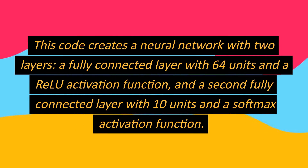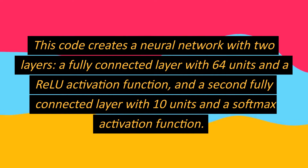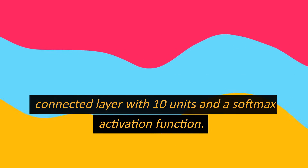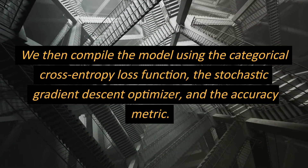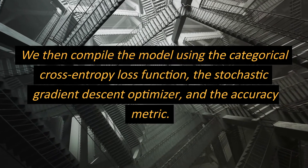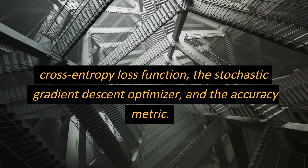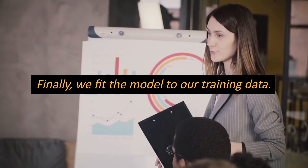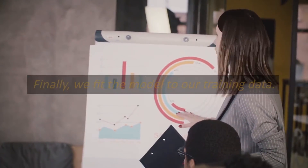This code creates a neural network with two layers: a fully connected layer with 64 units and a ReLU activation function, and a second fully connected layer with 10 units and a softmax activation function. We then compile the model using the categorical cross-entropy loss function, the stochastic gradient descent optimizer, and the accuracy metric. Finally, we fit the model to our training data.